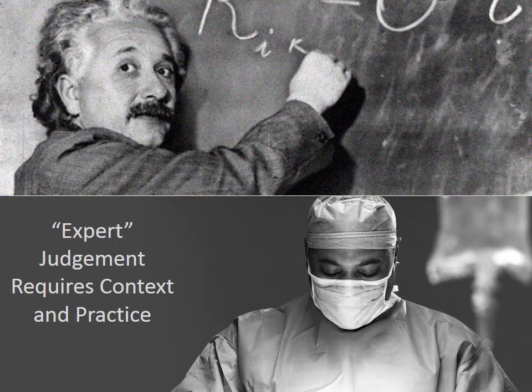Expert judgment requires context and practice, and it's through that practice that you get calibrated. You start seeing where you got it wrong and understanding why you got it wrong time and time again, and through that feedback loop you get better at being an expert.